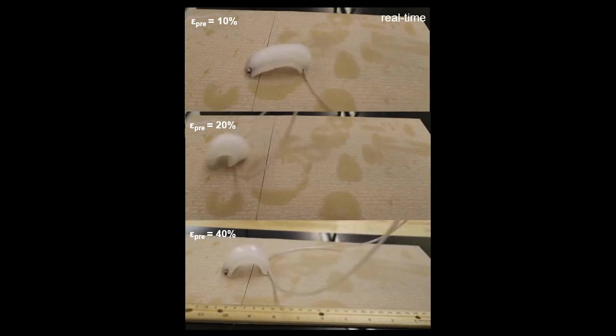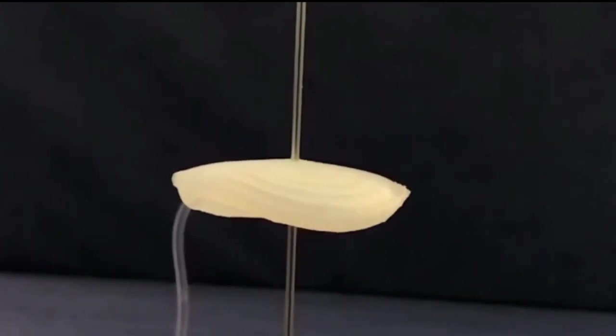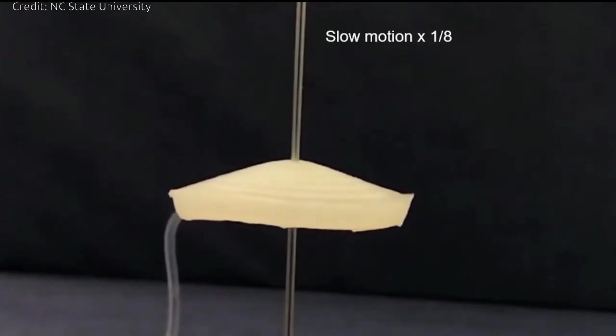When combined with a third stress-free layer, called an intermediate layer, the pre-stressed layer wants to move in a particular direction. For example, you might have a piece of polymeric strip that has been pre-stressed by pulling it in two directions.